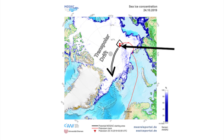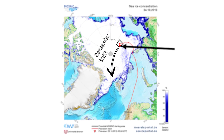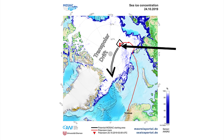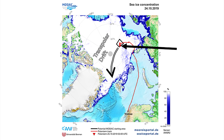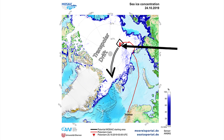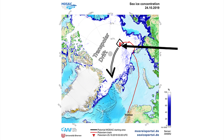When you follow the split arrow labeled Transpolar Drift, you will see that it passes the North Pole at something like a hundred kilometers and then goes towards the Fram Strait near Svalbard and eventually into the Nordic Seas. That's the drift track we expect, and it's part of a larger current that is largely driven by the atmosphere pushing the sea ice and the ocean across the central Arctic.